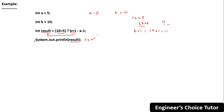Now suppose the condition is false. If the condition is false, the expression after the colon is evaluated. The expression after the colon is `a - 1`, so `5 - 1 = 4`. If the condition were false, the result would become 4.